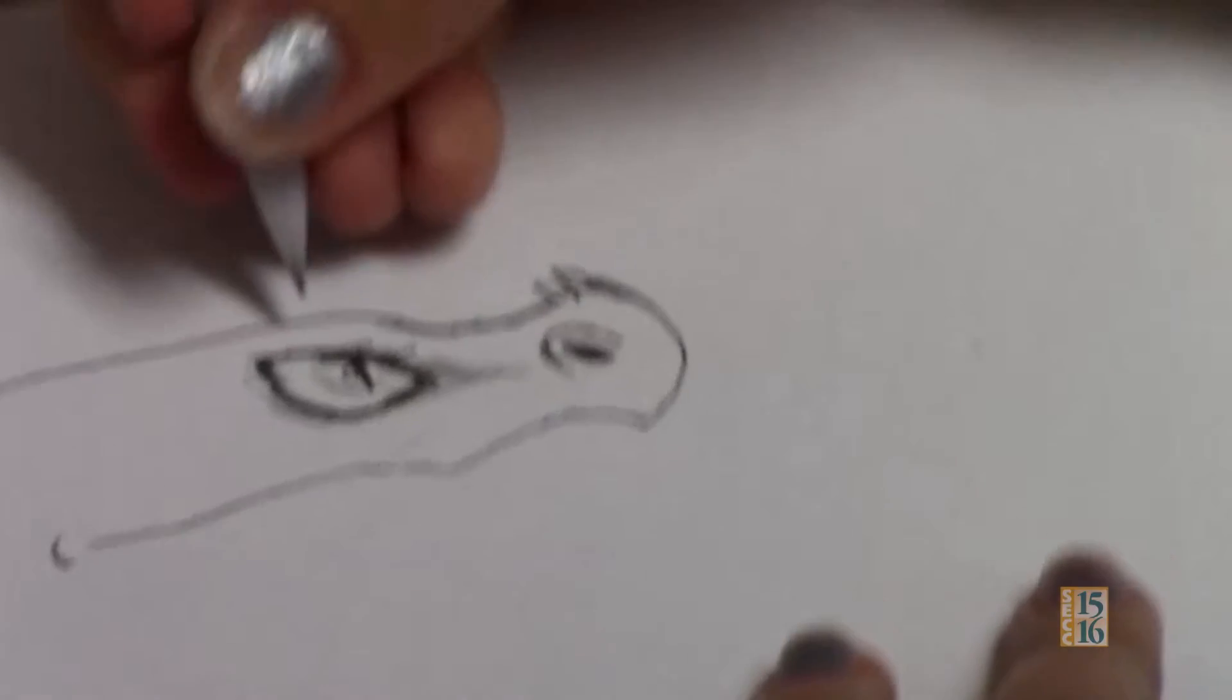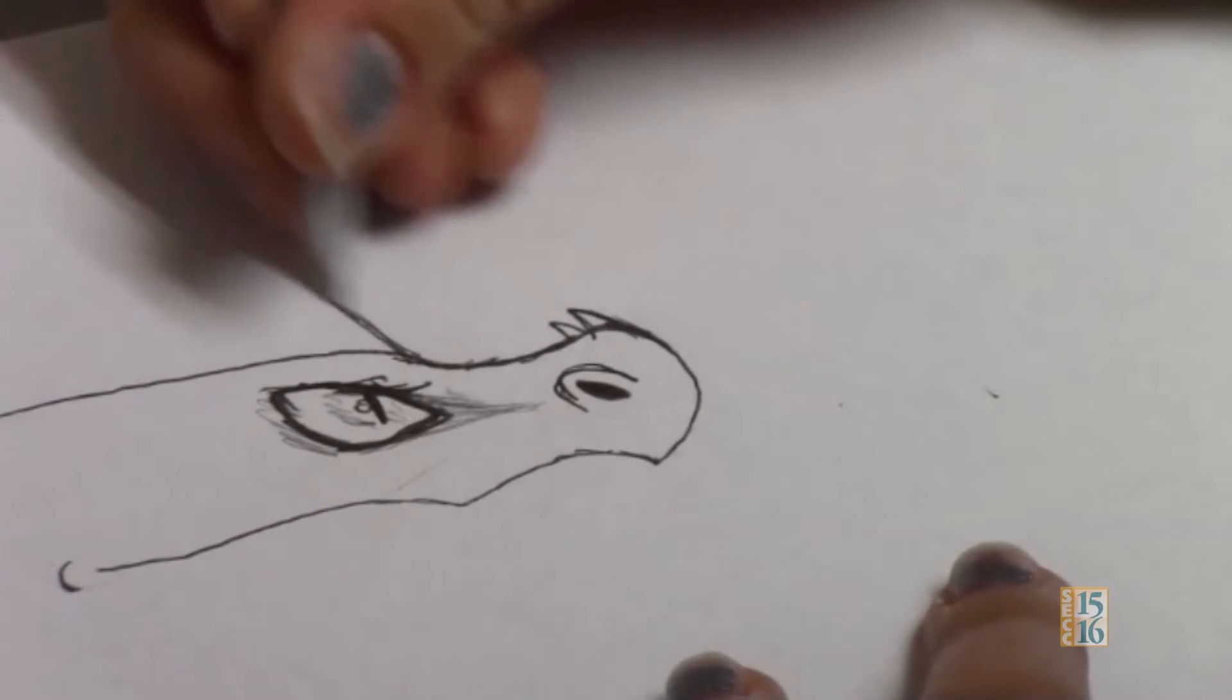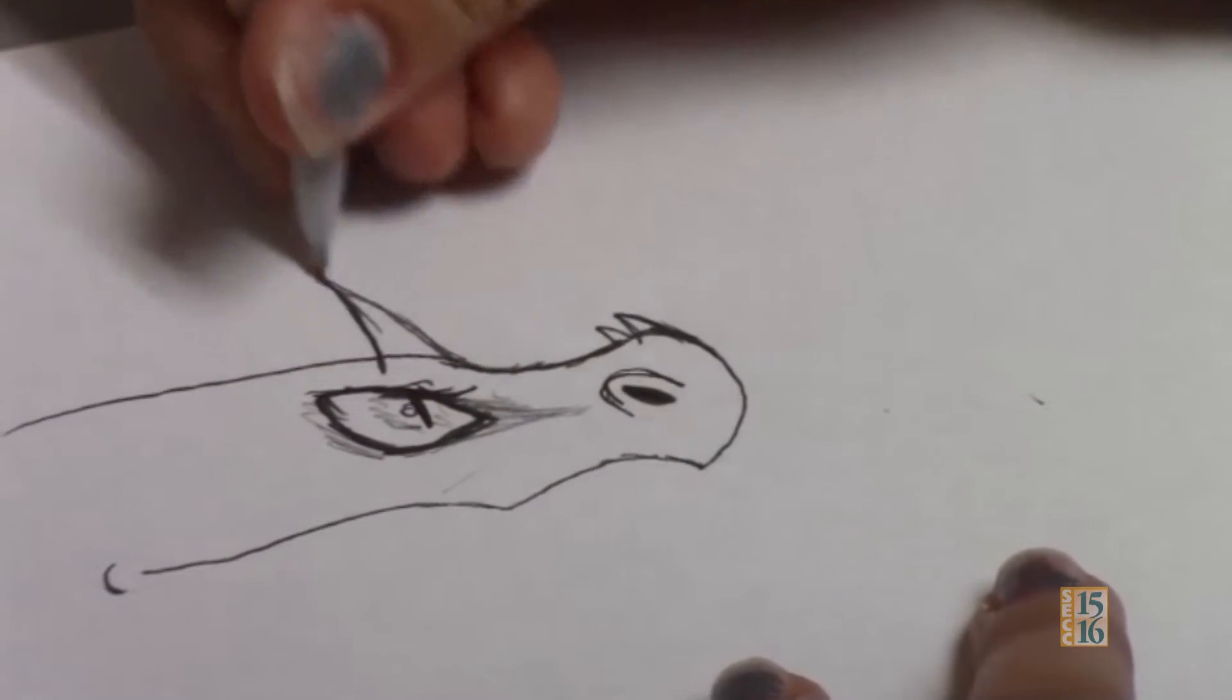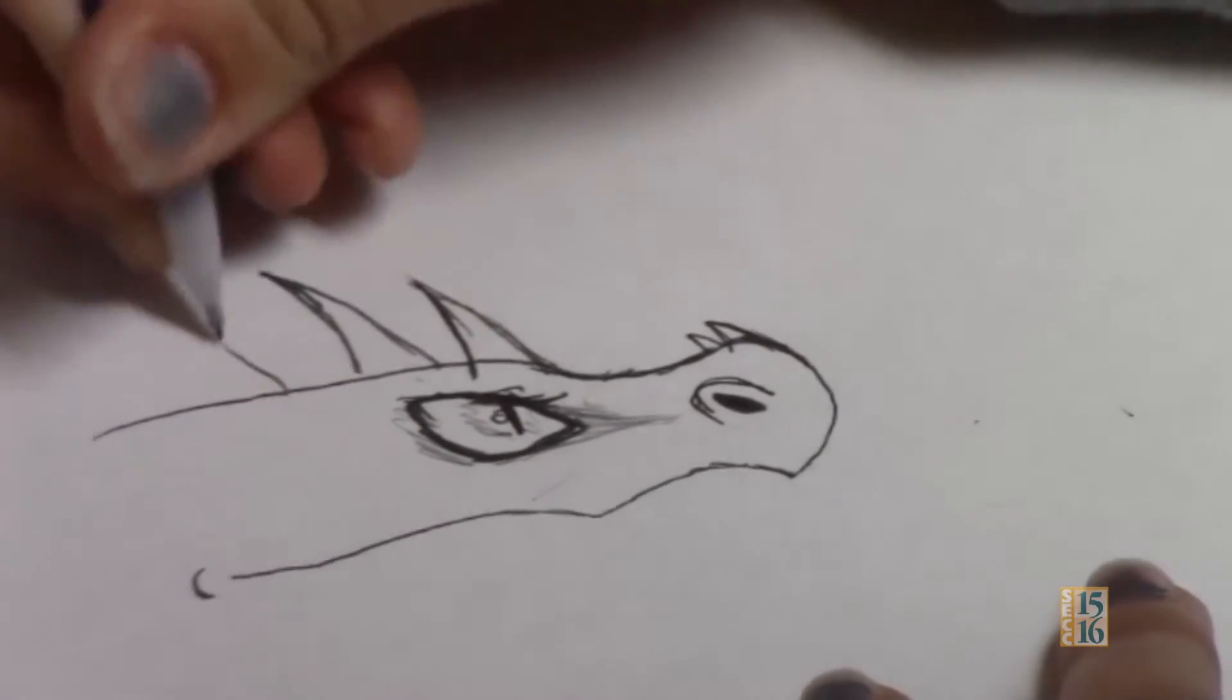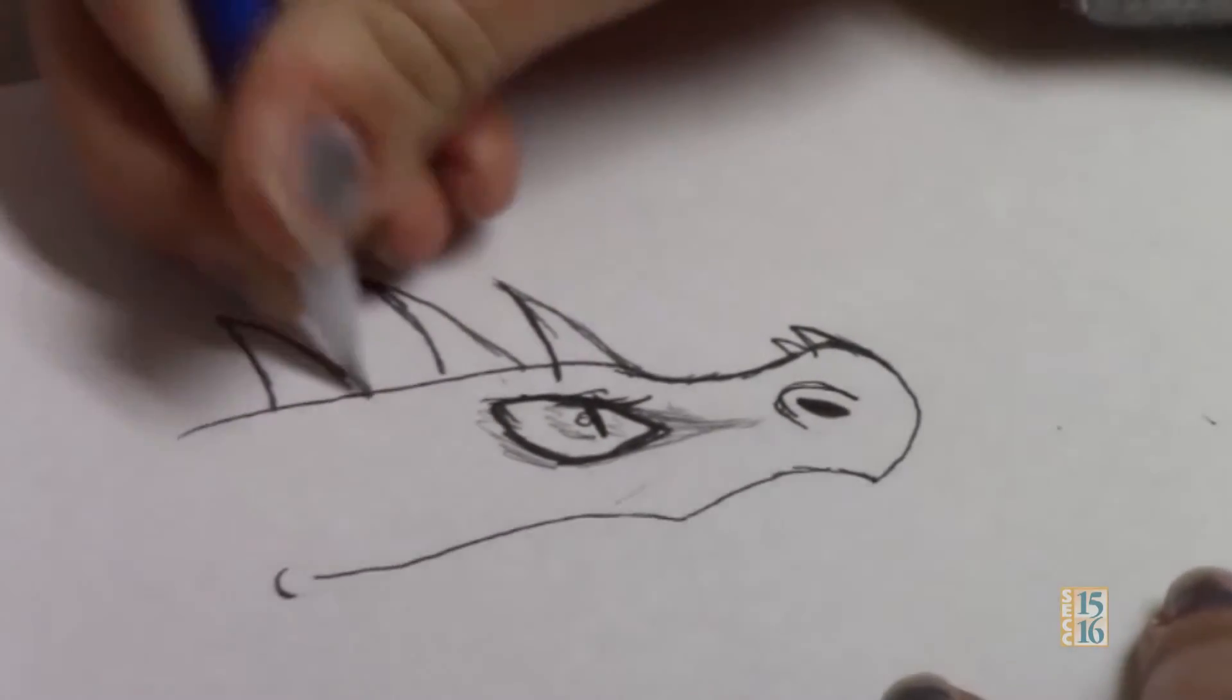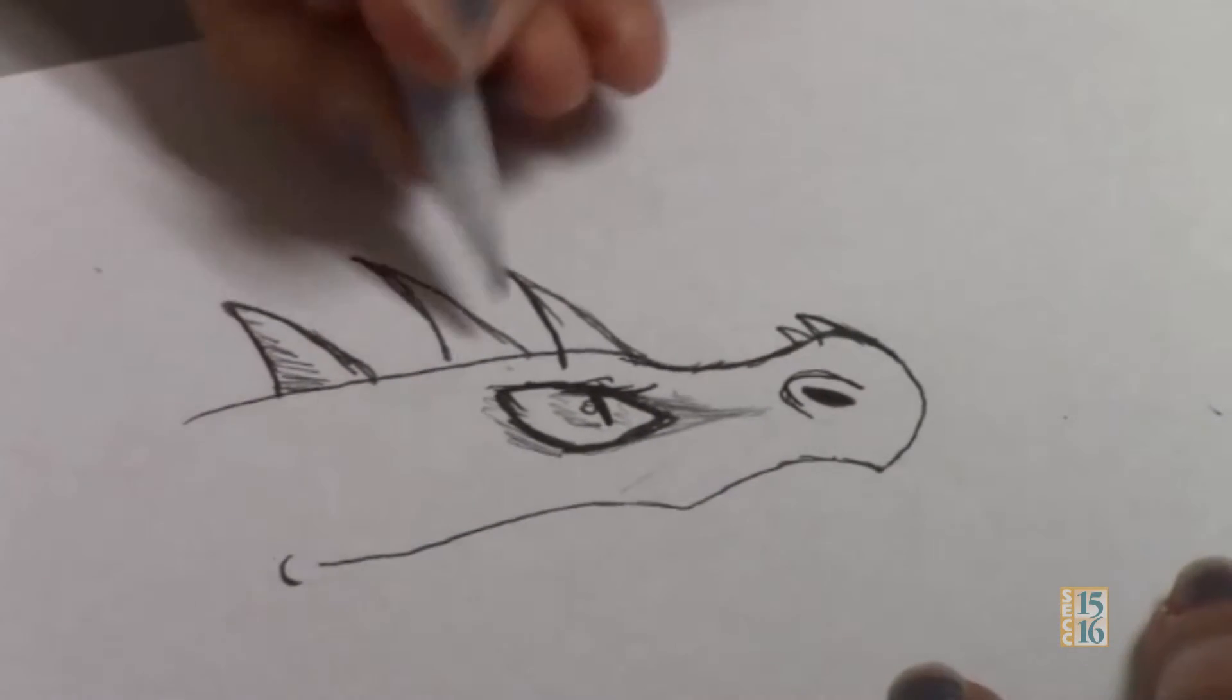And then you can add some spikes on the top or fur or something. These are my three spikes. And then you can add this for shadows on the front.